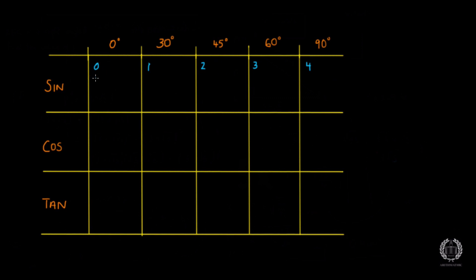So we're dividing every single one of these numbers by 4. 0 divided by anything is just 0. Then 1 divided by 4 is just a quarter. Then 2 divided by 4 simplifies to give us a half. Then 3 divided by 4 is just three quarters. And then 4 divided by 4 equals 1. So starting from 0, 1, 2, 3, 4 and dividing every number by 4 gives us 0, 1/4, 1/2, 3/4 and 1.